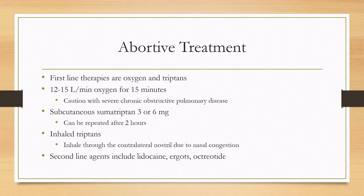For abortive treatment, the first-line therapies are oxygen and triptans. Oxygen is given at 12 to 15 liters per minute for 15 minutes. Since the majority of patients with cluster headaches are cigarette smokers, caution is advised in patients with severe COPD. For those patients, triptans may be offered — subcutaneous sumatriptan 3 mg or 6 mg, repeated two hours after the first dose, ideally given at headache onset. Inhaled triptans can also work, but should be inhaled through the contralateral nostril due to nasal congestion in the ipsilateral nostril.